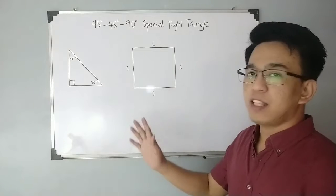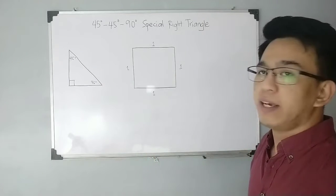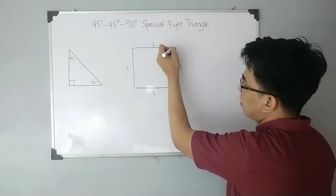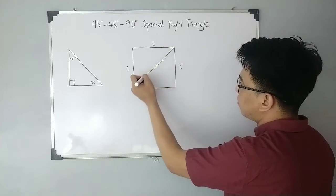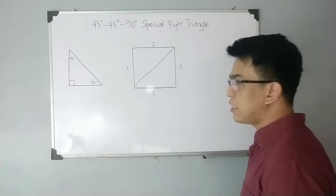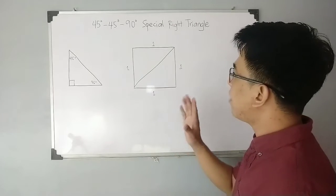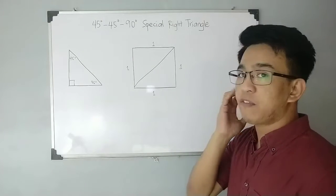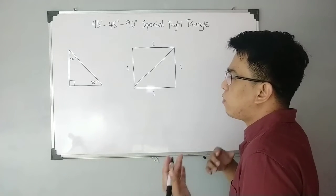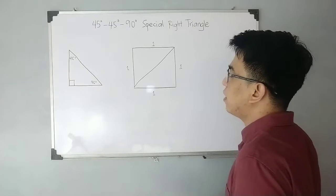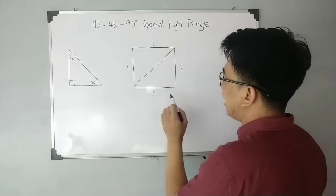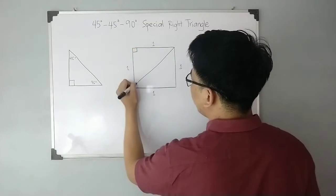To derive that right triangle, the first step we need to do is to draw a diagonal — a single diagonal from this corner up to this corner. Now we need to find the length of that diagonal. Since this is a square, it has four equal sides and four right angles.